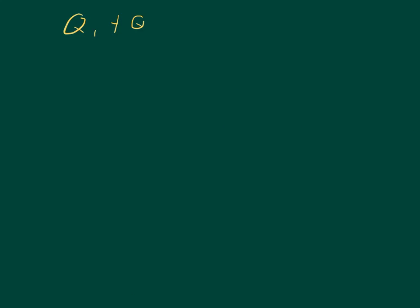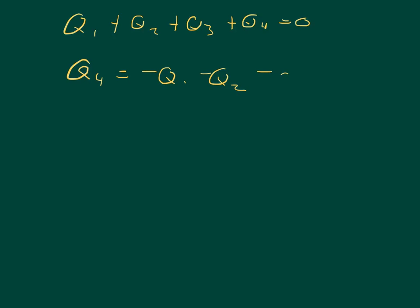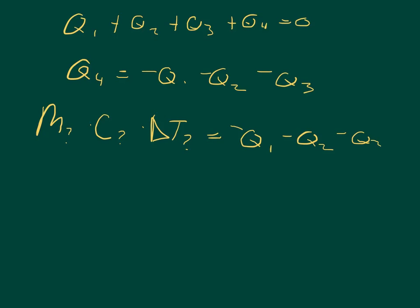We set up our equation where Q1 plus Q2 plus Q3 plus Q4 equals zero. We can solve for Q4, so Q4 equals negative Q1 minus Q2 minus Q3. We can expand Q4 to be the mass of the unknown times the specific heat capacity of the unknown times the change in temperature of the unknown, and that equals negative Q1 minus Q2 minus Q3. Then we divide both sides by the mass and the change in temperature of the unknown.